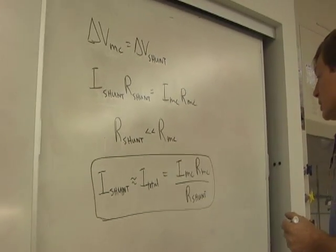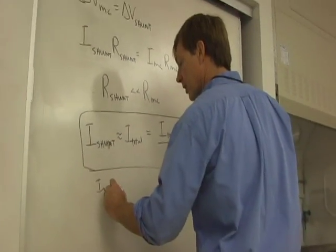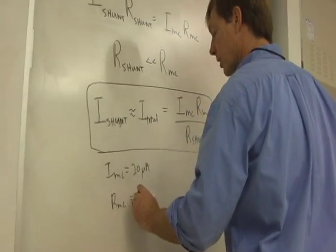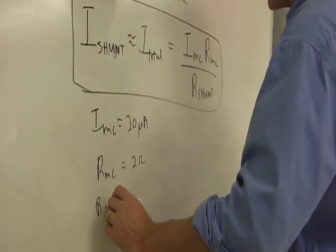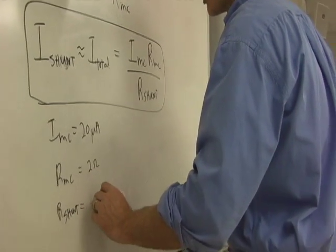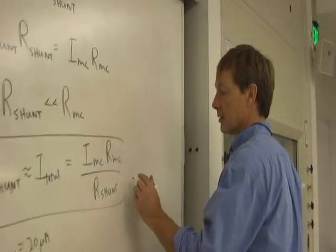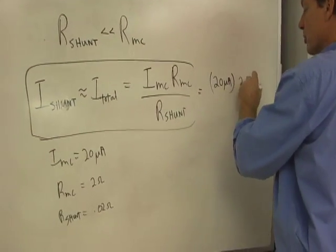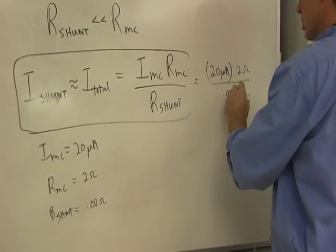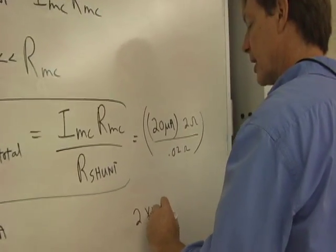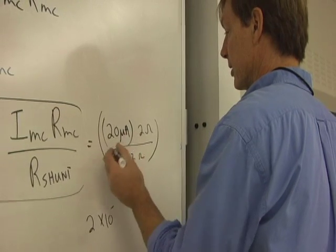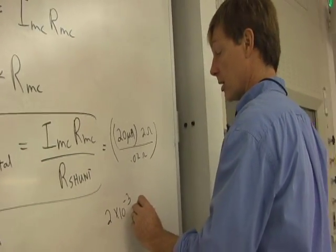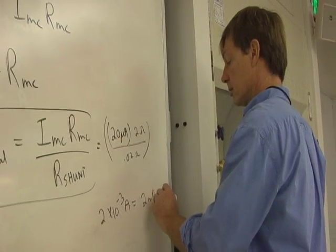So let's see. The shunt would be much less. So if the moving coil current was 20 microamps, and the resistance of the moving coil was maybe 2 ohms, and the resistance in the shunt is 0.02 ohms, then the current would read, let's see, it'd be 20 microamps times the resistance of the moving coil, which is 2 ohms, divided by 0.02 ohms, which would be 2 times 10 to the minus 5, 2 times 10 to the minus 3 amps, which would be 2 milliamps.